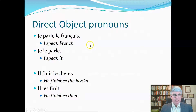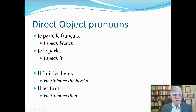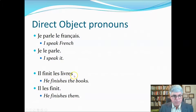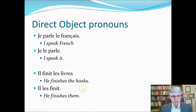Let's look at the direct object pronouns. If we have the sentence 'je parle le français' — I speak French — we can replace 'French' with a pronoun. In French, we put it before the verb. Since it's a masculine singular noun, we replace it with 'le': 'je le parle' — I speak it. Another example: 'il finit les livres' — he finishes the books. We replace 'les livres' with a pronoun in front of the conjugated verb: 'il les finit' — he finishes them.